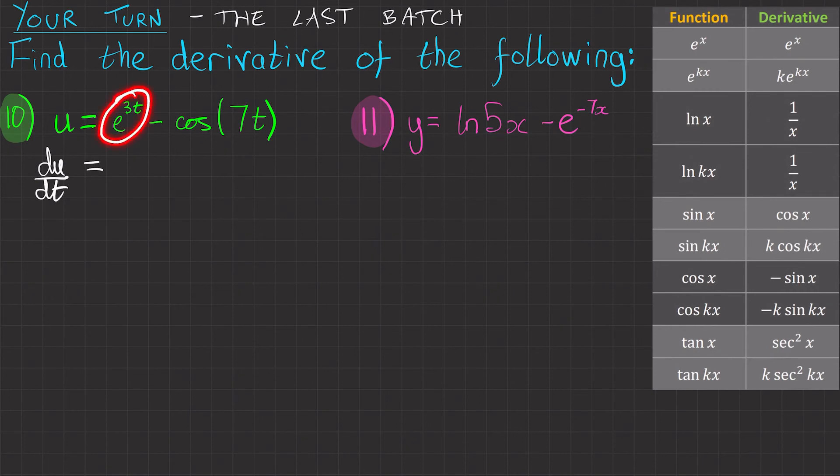The first part we've got e to the 3t. So looking at our table, this is the function we'll be using. So here's the derivative. So it'll be 3e to the 3t. Then minus.